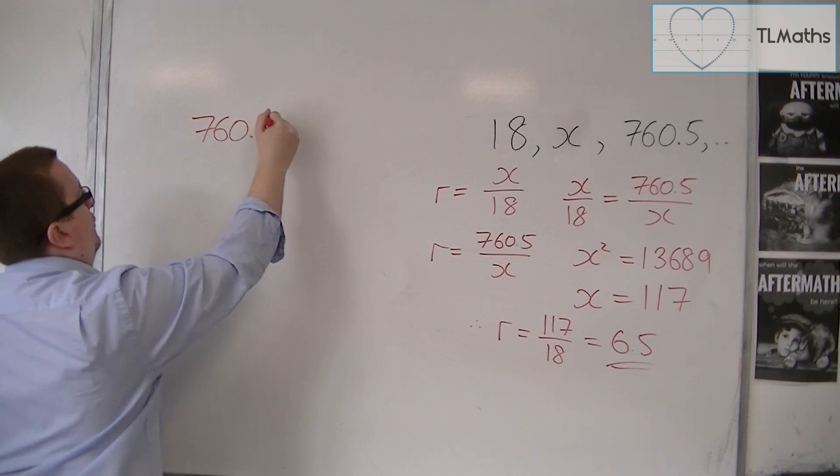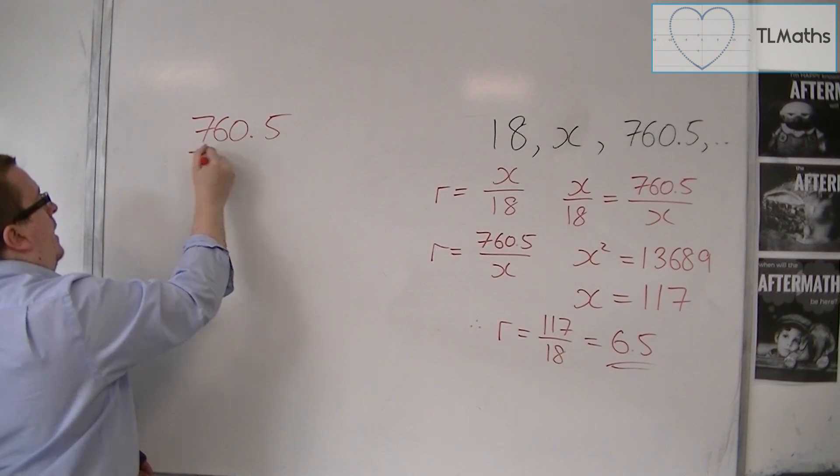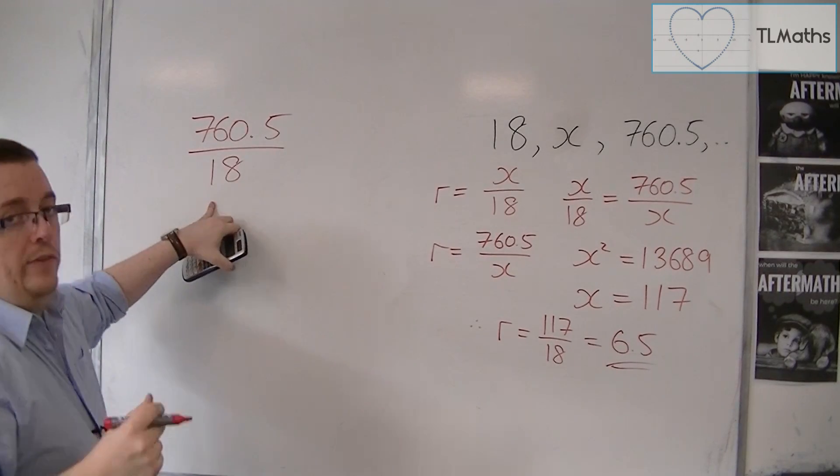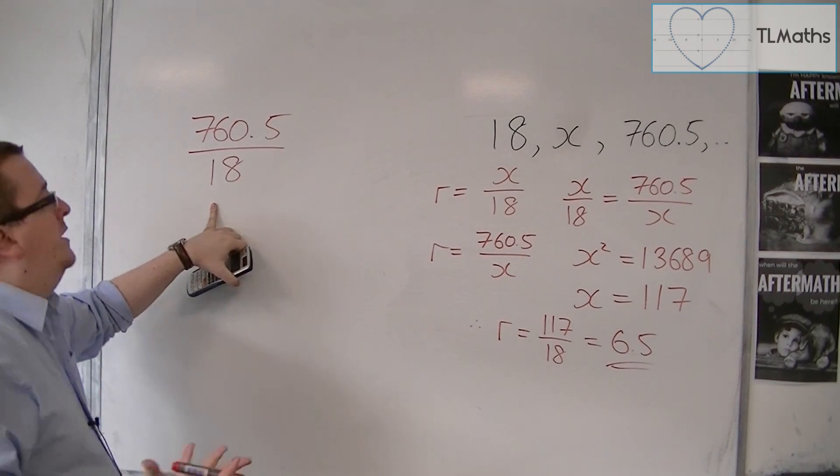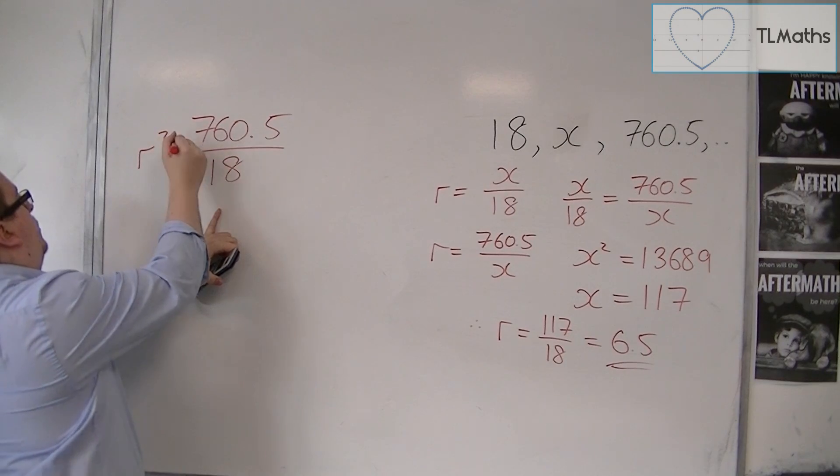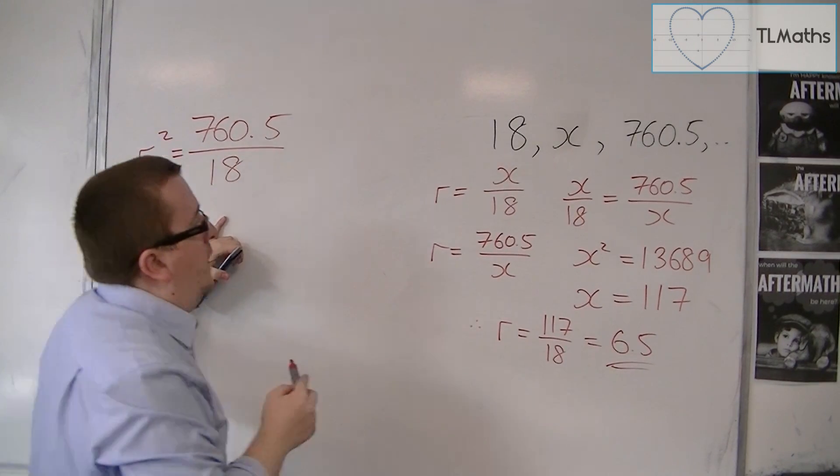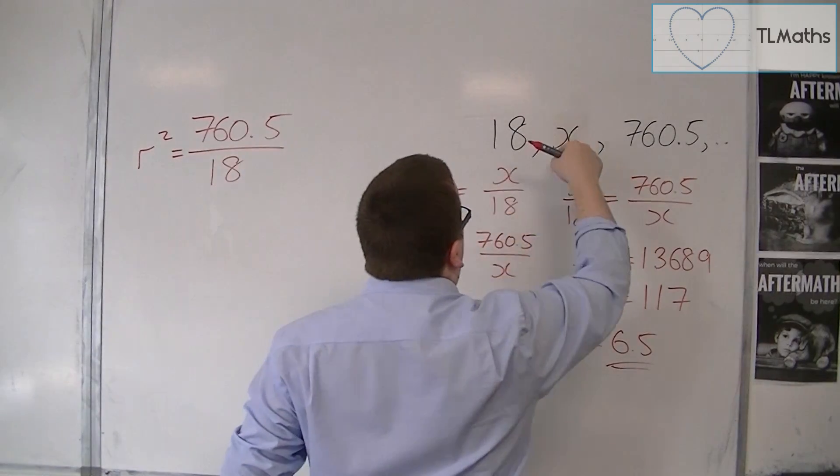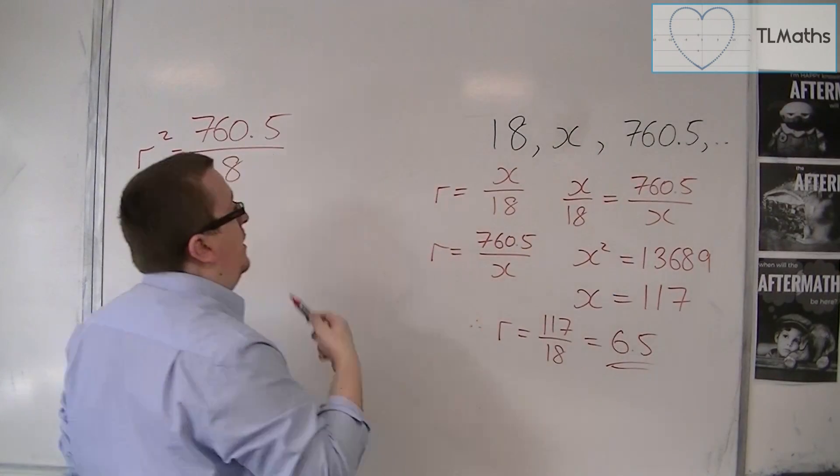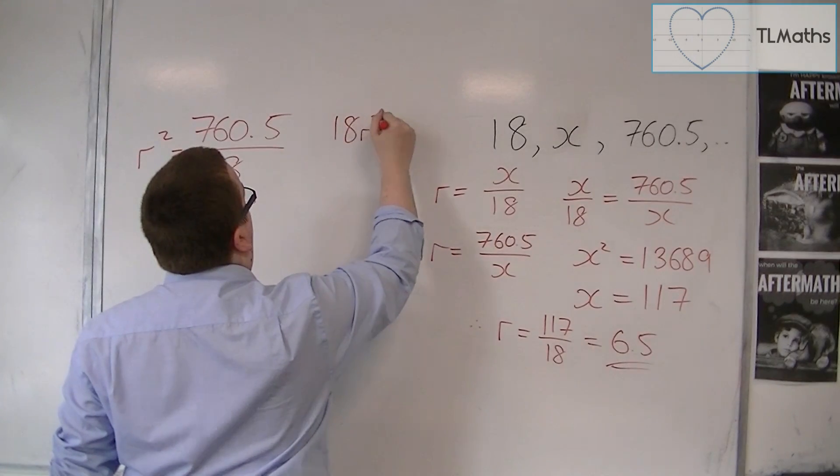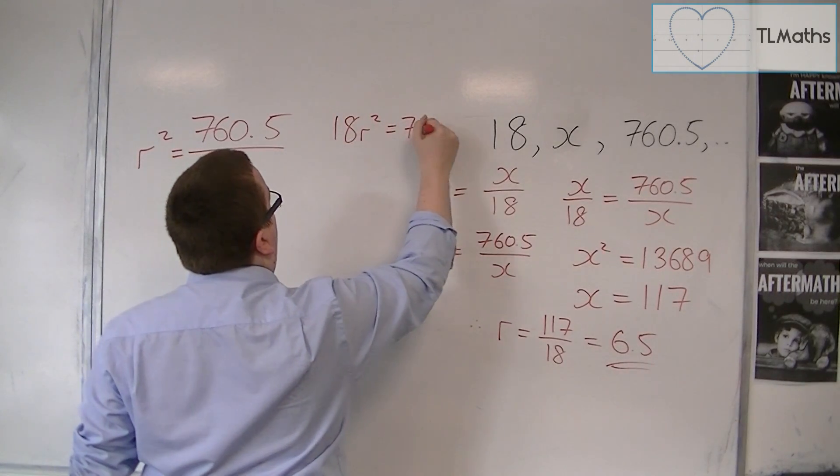760.5 is the third term. The first term is 18. So what that is, is r squared. That is telling you what r squared is equal to. Because what you've got here is, you've got 18 times r times r will give you 760.5. So 18r squared is 760.5.